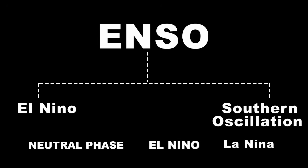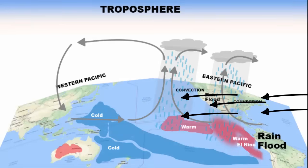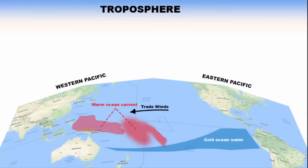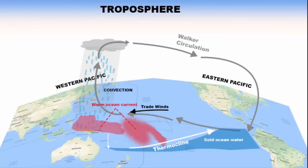The third phase is La Niña, which is similar to the neutral phase. In this phase, the trade winds are strong. Since trade winds blow from east to west, they push the warm ocean current from the eastern Pacific towards the western Pacific. Cold water is dense and settles in the deep ocean, so when the trade winds push the warm surface ocean current westward, cold water from the deep ocean immediately rises to the surface — there is a term for this called thermocline. The rest of the process is the same as the neutral phase: the western Pacific region of Australia, Indonesia, and New Zealand gets heavy rainstorms. The effect of La Niña is more on these countries than El Niño. So El Niño is a warm ocean current and La Niña is a cold ocean current — and it oscillates back and forth.